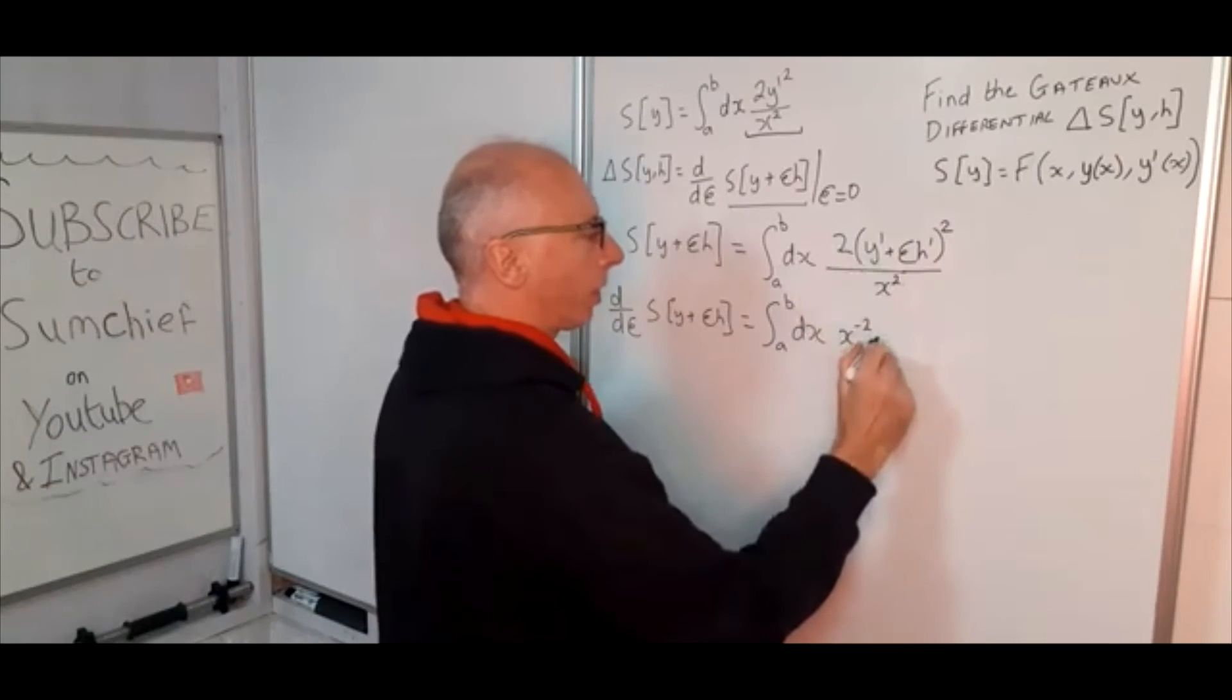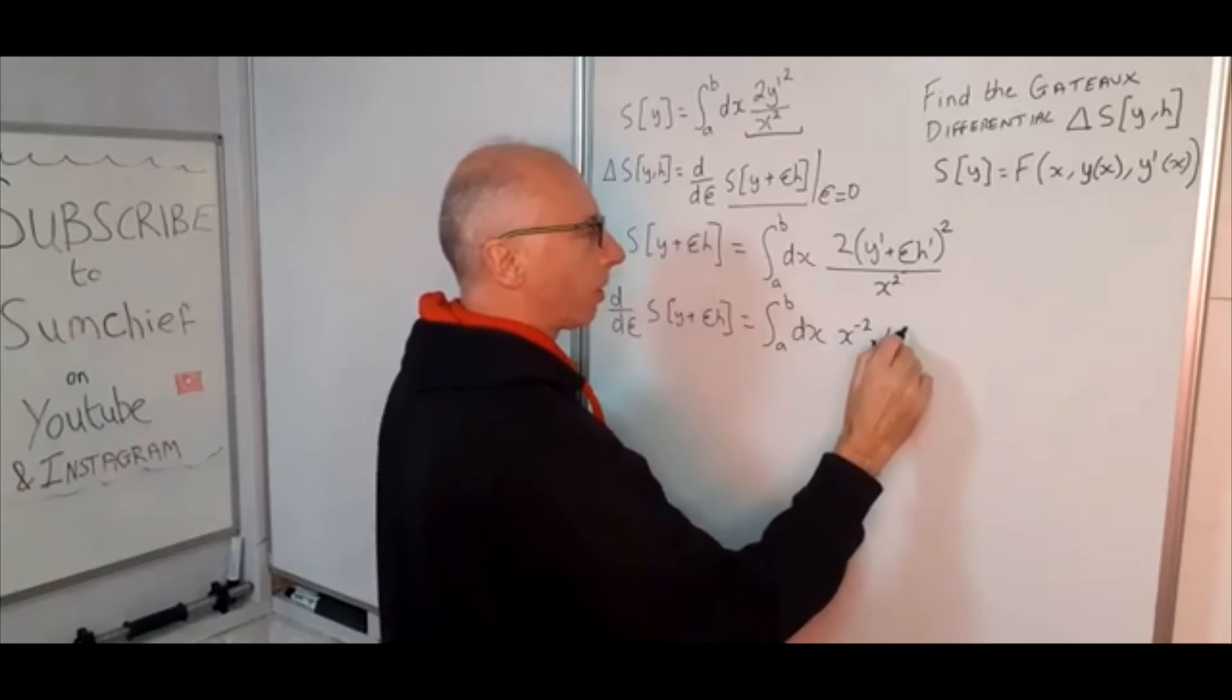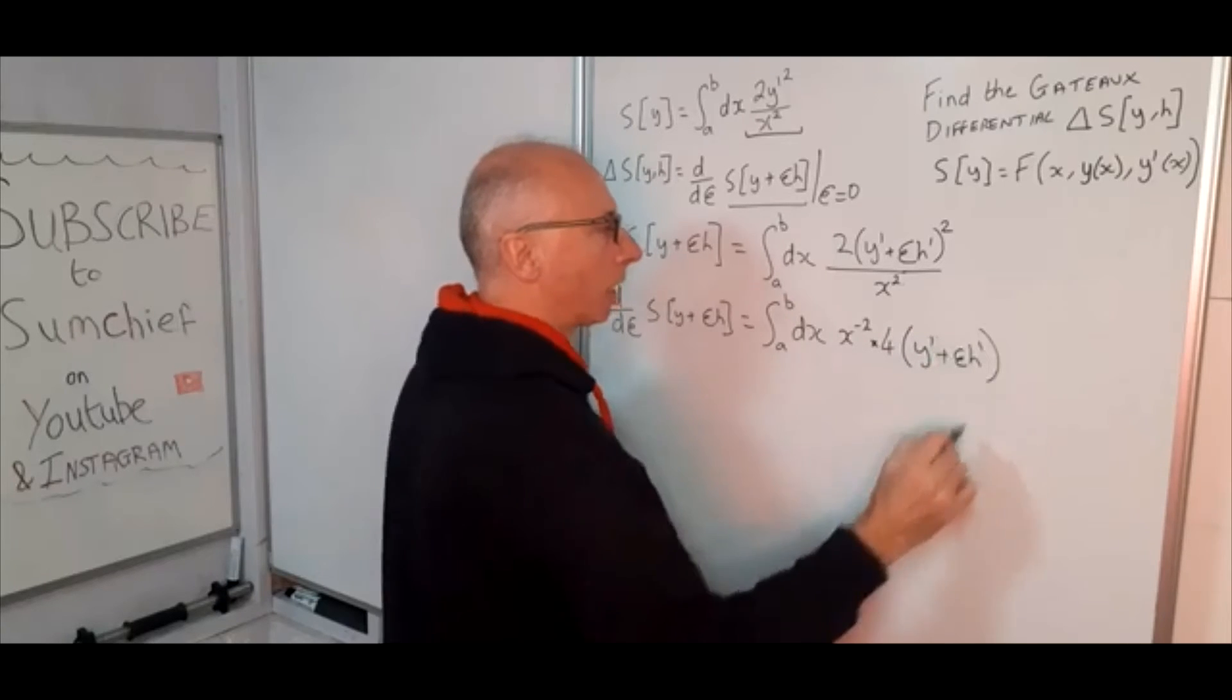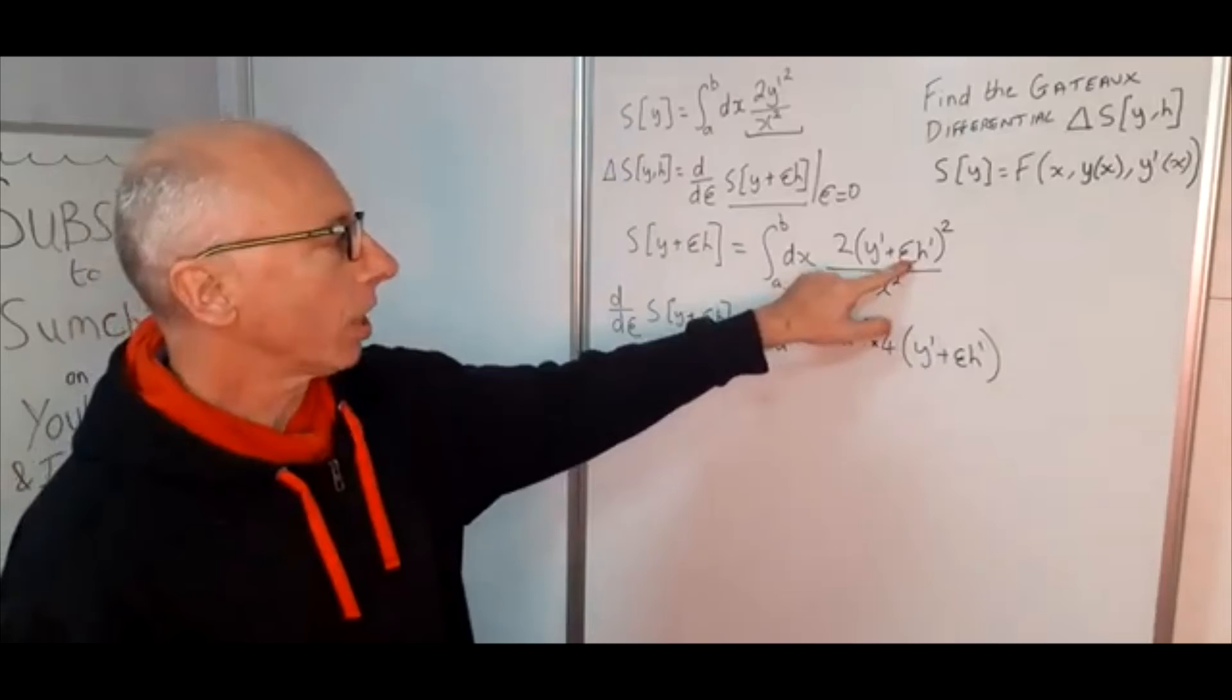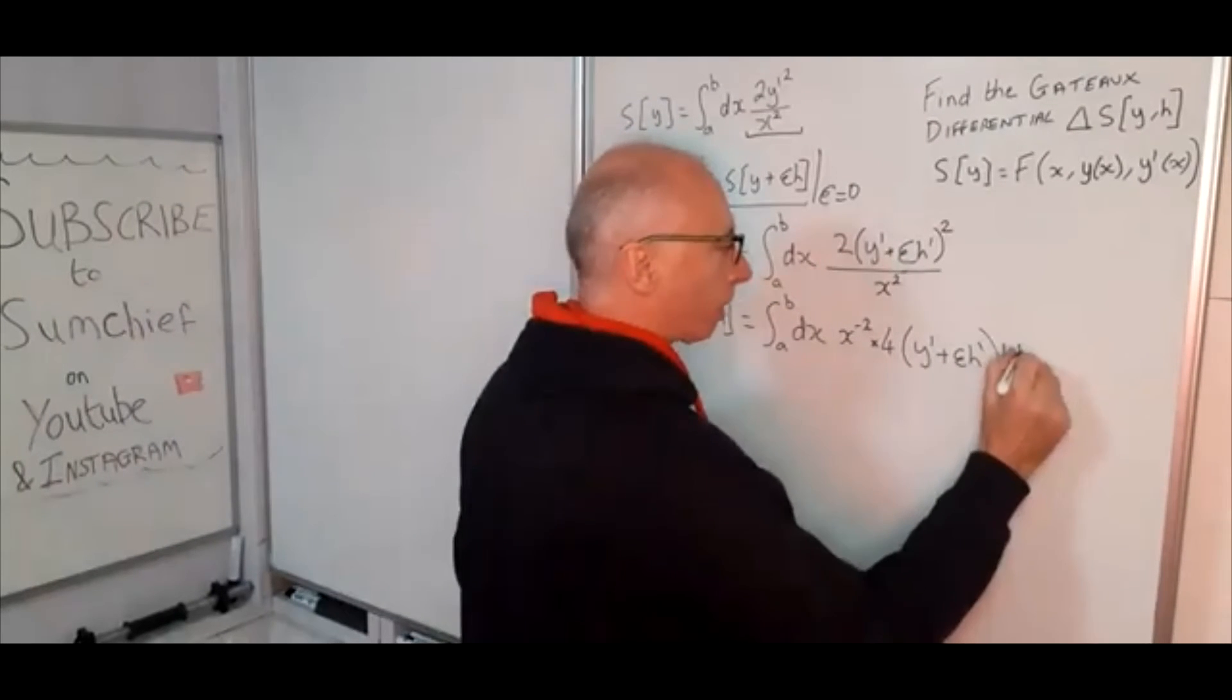So bring the two out front, so we have got four. I have got a little multiply sign there just to make sure that is separate. So four, and then y prime plus epsilon h prime, and then with the chain rule take the derivative with regards to epsilon of the inside which is going to leave us with another h prime.